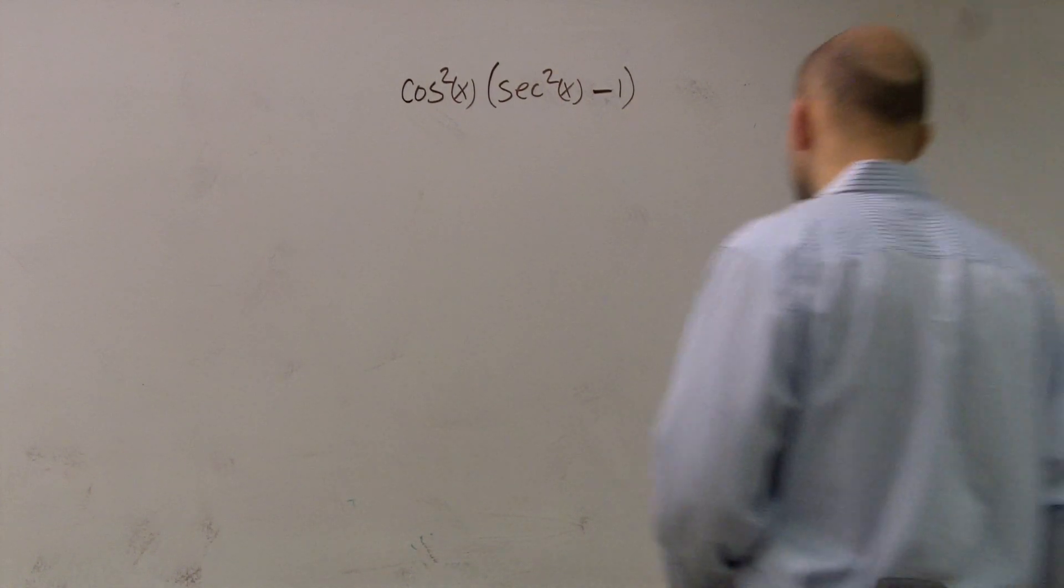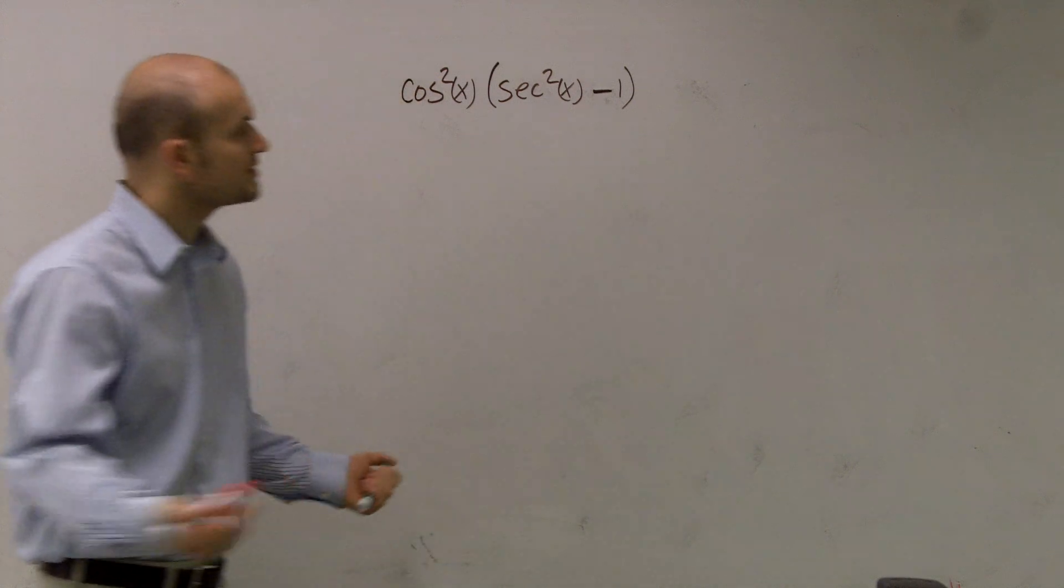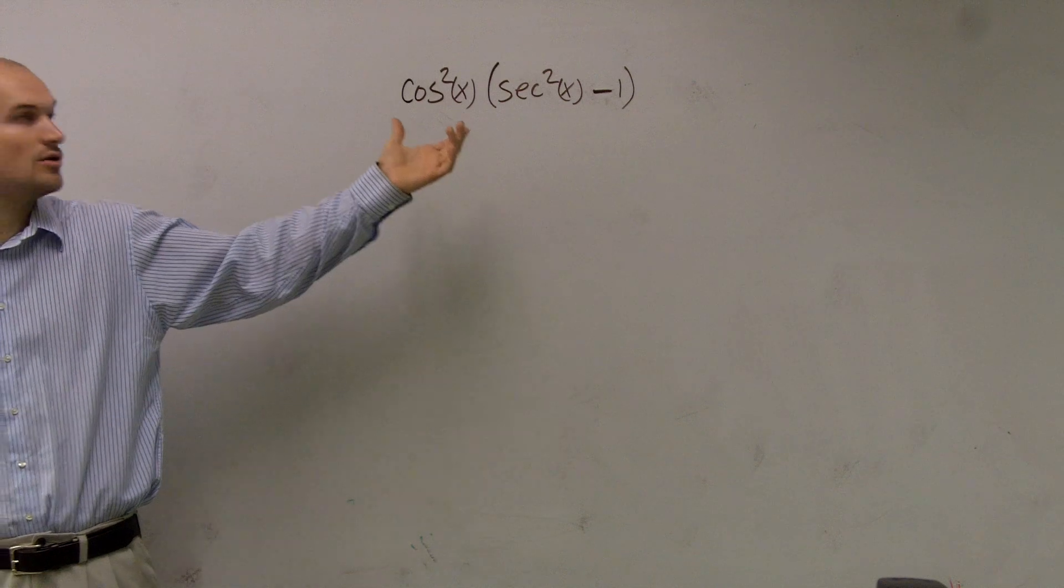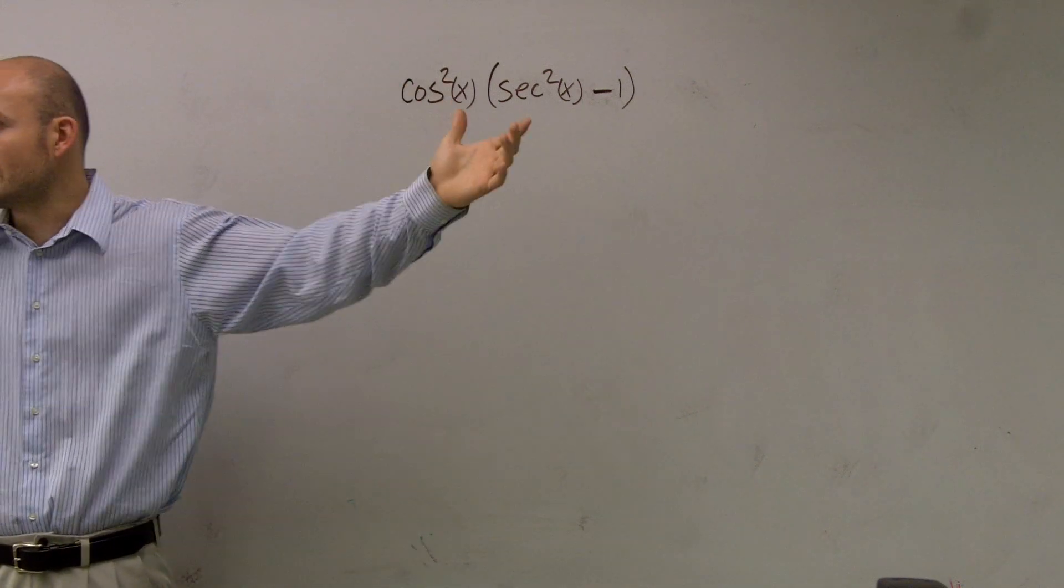All right, so if I was going to work through this problem, ladies and gentlemen, there's a couple things we could look at. One thing, we could say how can I transform cosine squared by using the Pythagorean identity?